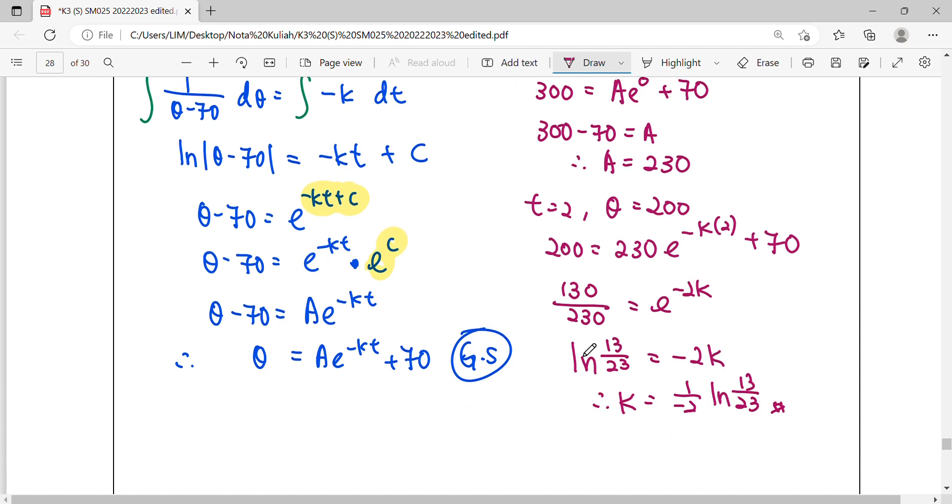The particular solution is θ = 230e^((-1/2)ln(13/23)t) + 70, where A is 230 and K negative negative becomes positive when we substitute.